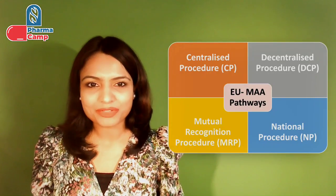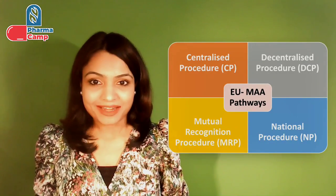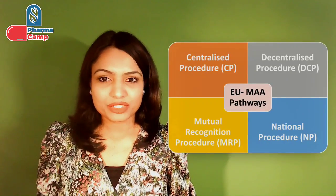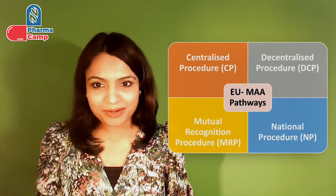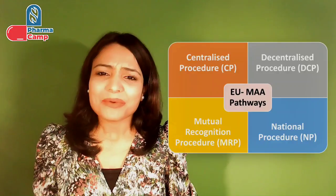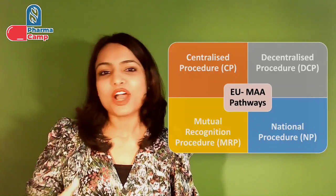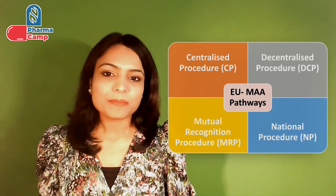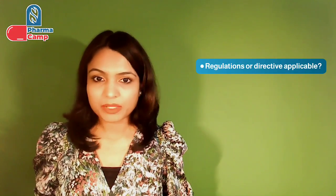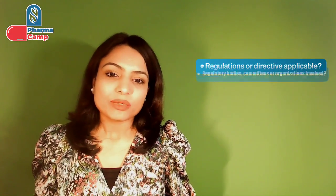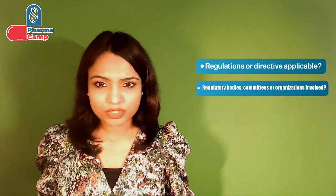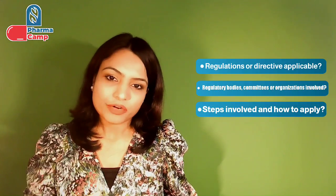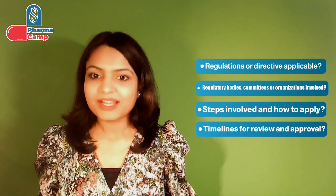In the last video, we saw that there are four types of marketing authorization pathways in EU: Centralized, Decentralized which is called DCP, Mutual Recognition Procedure which is called MRP, and the fourth one is National. We talked about the details and differences of each of these pathways. Now we will pick each one and talk about them one by one — the regulations applicable, the regulatory bodies involved, the steps, and the timelines for review and approval. Let's start with the centralized pathway in today's video.